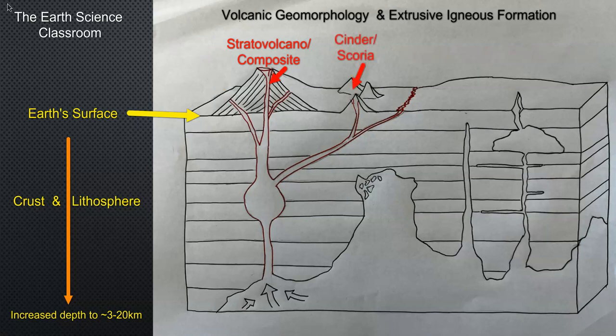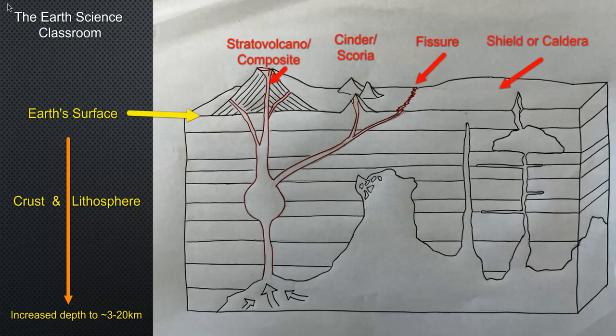Cinder cone volcanoes come in groups and are smaller. You have the fissure eruptions and fissure volcanoes that are classically found in areas like Iceland. You have the large shield or caldera volcanoes that are very wide and usually very tall and very impressive. Some of the most explosive volcanoes in the world come from this, and we're also looking at shield volcanoes like Mauna Loa and Mauna Kea in the Hawaiian Islands in the United States.